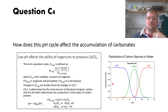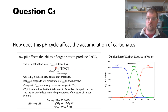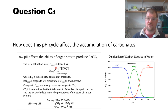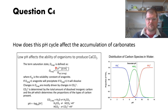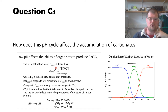That feeds into the saturation state — whether you get precipitation or dissolution of a carbonate mineral like aragonite or calcite — which depends on the concentration of carbonate ion. High carbonate ion means high pH and a saturation state greater than one, meaning you're more likely to precipitate carbonates. If you acidify the ocean with low pH, it becomes harder to precipitate carbonates.